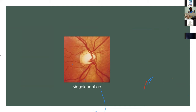Megalopapilla shows large discs and large cups in both eyes following the ISNT rule, with normal IOP in most patients. Non-glaucomatous optic atrophy — such as anterior ischemic optic neuropathy or neurological diseases — shows more pallor than cupping, with normal IOP, visual field defects that respect the vertical midline, and defective color vision, helping to differentiate from glaucoma.